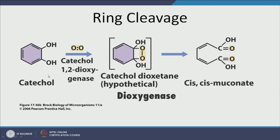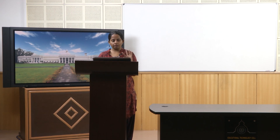Catechol is then acted upon by catechol 1,2-dioxygenase, which adds two oxygens — one on each position. The intermediate is still hypothetical, but we know the bond breaks to produce cis,cis-muconate, which is very easy to degrade. The catechol 1,2-dioxygenase enzyme has very specific genetic signatures that serve as genetic biomarkers to detect aromatic ring cleavage.